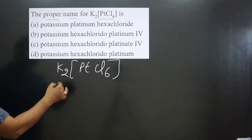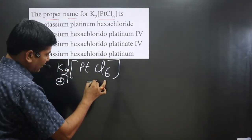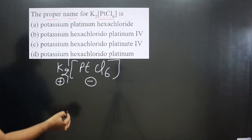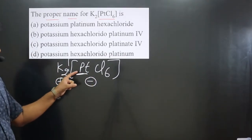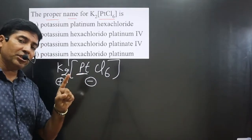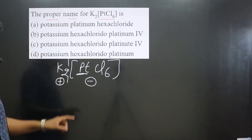Now if you break this complex from here, the first part is positive and the next part is negative. You can see the central element is present in the anionic part. Hence when we name it, we have to use a special name.